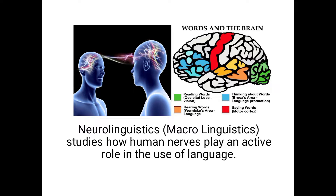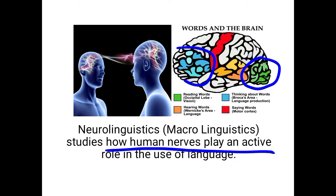Another example is neurolinguistics, which is also macro linguistics. In neurolinguistics, we study how humans produce language with the help of nerves. We study how reading and thinking about words come into existence, and how the brain and human nerves are used to produce language. Neurolinguistics is an interdisciplinary study involving human nerves, the brain, and language.